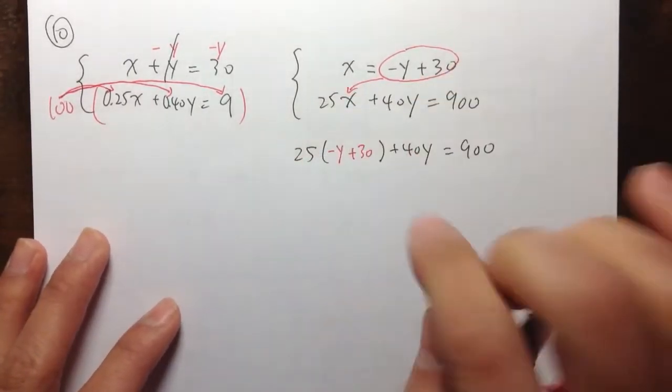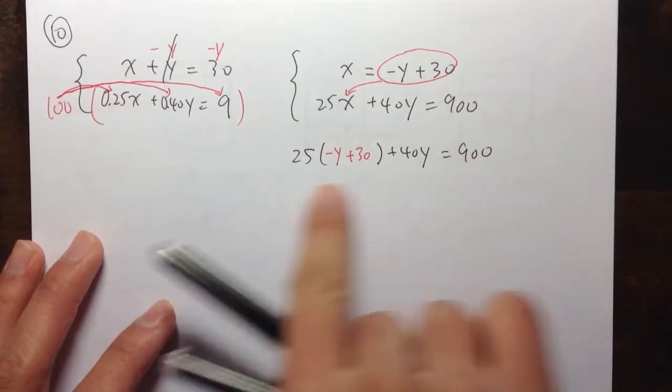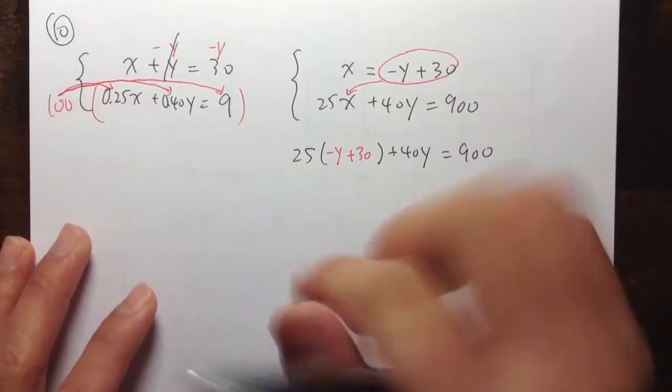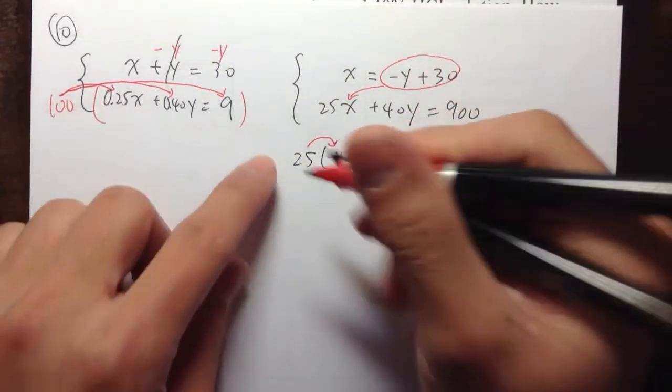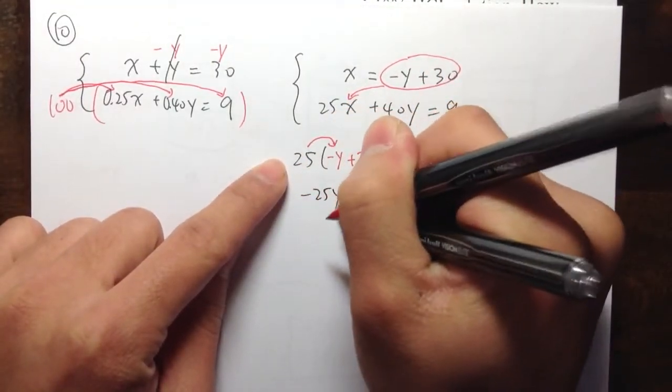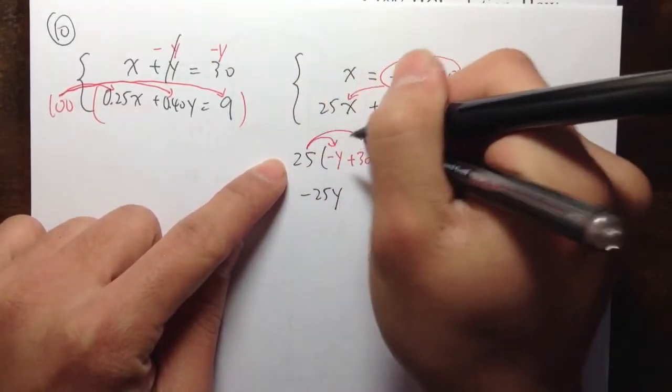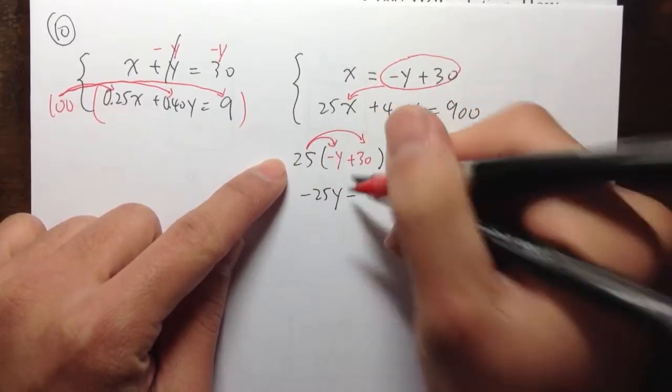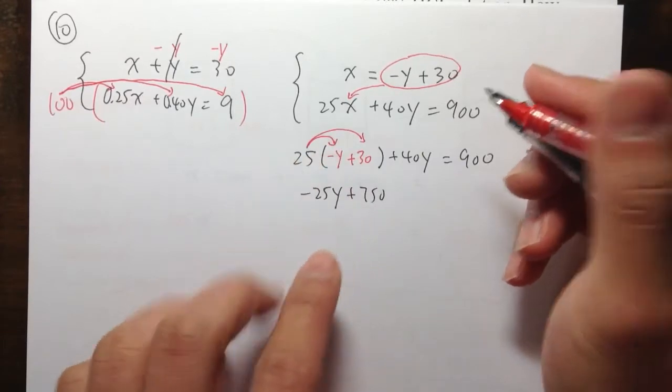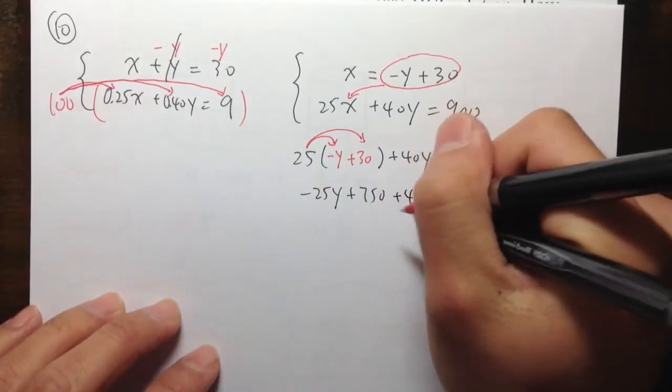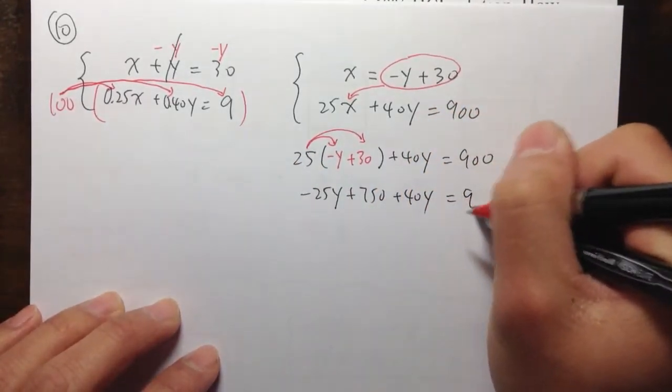And then, as usual, now once we do the substitution, this is just a usual equation. Distribute the 25 into the inside. So, we get negative 25y, 25 times 30, that should be plus 750, and that's it for the parentheses. Then, we have the plus 40y, equals to 900.